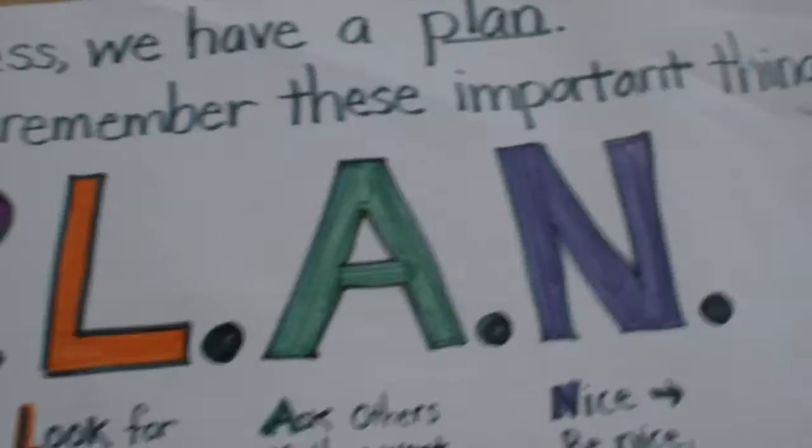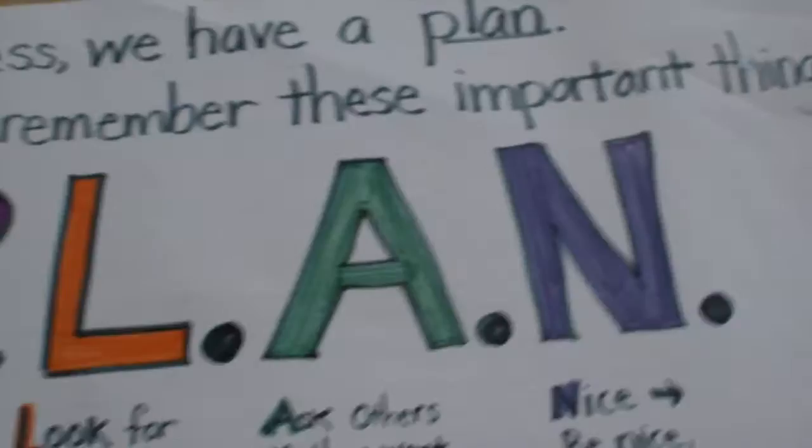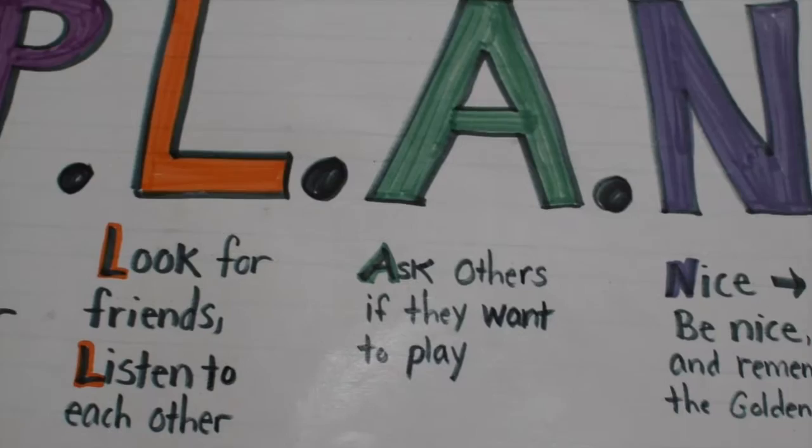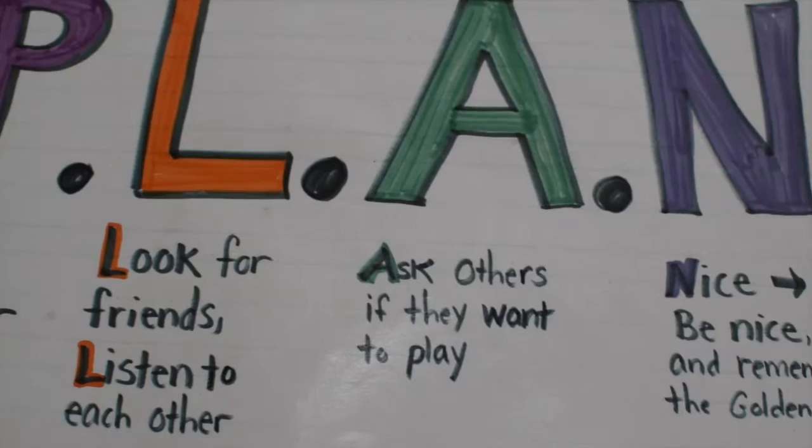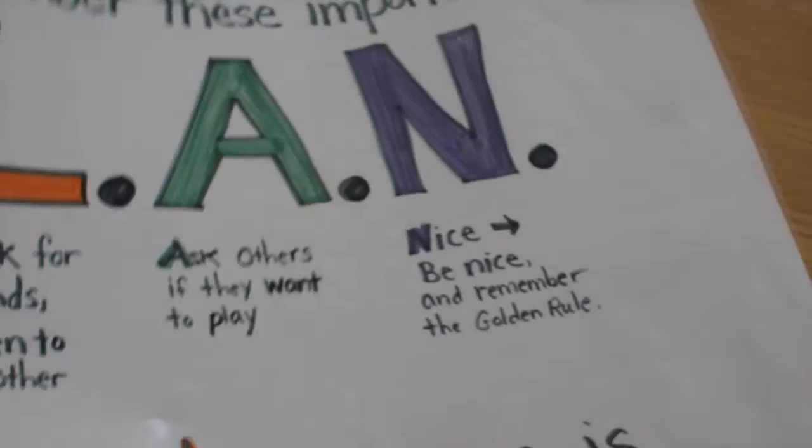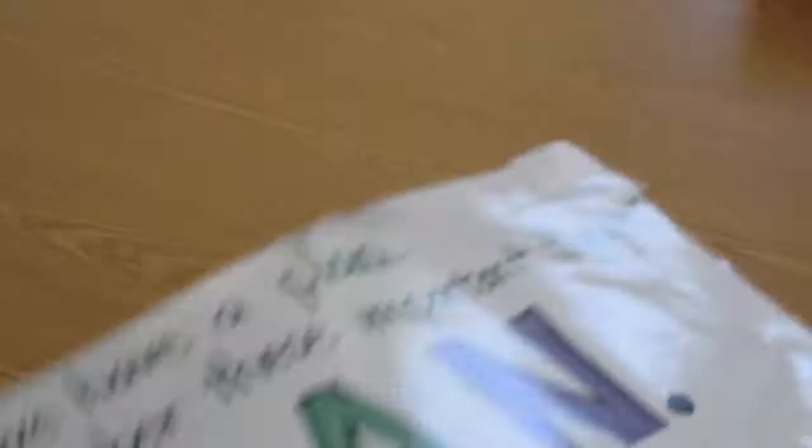But this opened up a conversation about recess success. So we talked about how can we have recess that's super fun, that feels good for everybody and people are having fun and everyone feels included. Like what will we have to do to make sure that that happens every day at recess? Something that my class came up with a couple years ago is, well, we could have a plan before we go to recess so we kind of know how it's going to go. And then they said that each letter in the word PLAN could stand for something else. So they came up with P for play together, L for look for friends, listen to each other, A for ask others if they want to play, and N for being nice, and remembering the golden rule, treat others the way you want to be treated. So this was hung up on our door that goes out to the recess yard, and I need to remake it for this year, but it was a nice visual reminder.